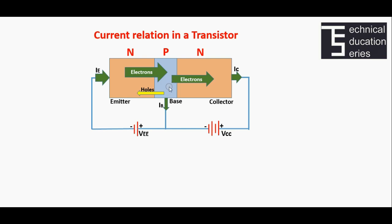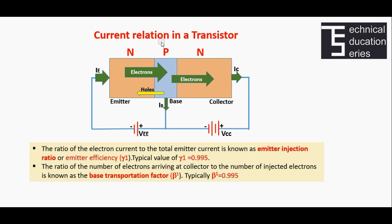Out of the electrons arriving at the base, very few combine with the holes available in the base and constitute the base current IB. The rest of the electrons cross over to the collector junction to constitute the collector current IC. The ratio of electron current to total emitter current is known as emitter injection ratio or emitter efficiency, with a typical value of 0.995. The ratio of electrons arriving at the collector to the number of injected electrons is the base transportation factor, with a typical value of 0.995.